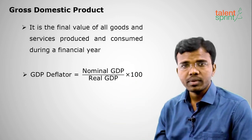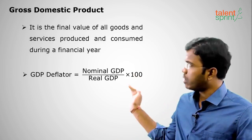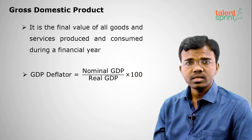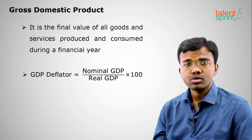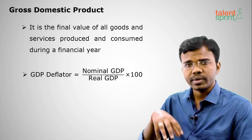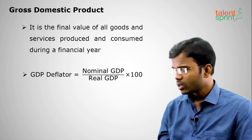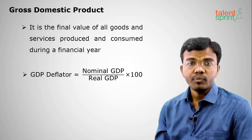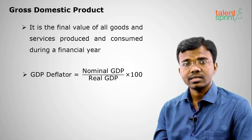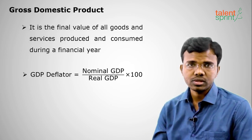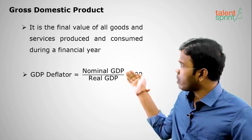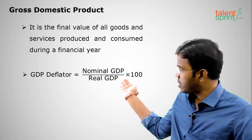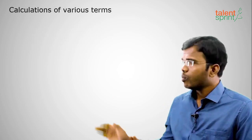The GDP deflator equals nominal GDP divided by real GDP multiplied by 100. Nominal GDP uses current year prices, while real GDP uses base year prices where prices are constant throughout the year. Comparing them gives the GDP deflator as a percentage.